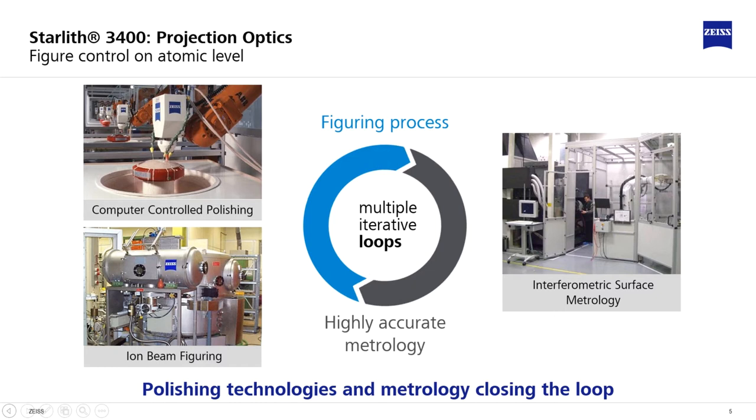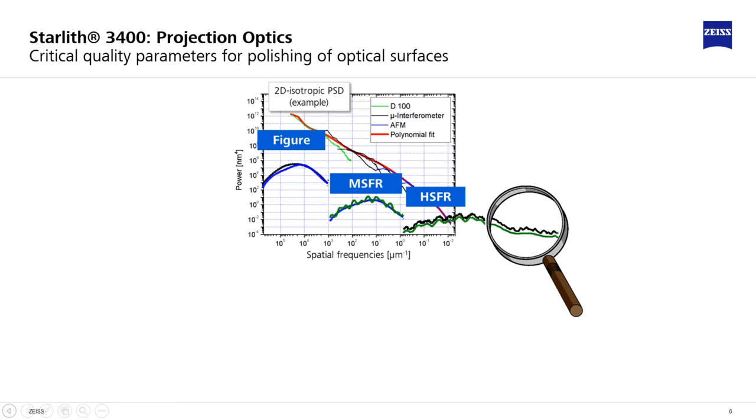Figuring processes and metrology form a closed loop of iterative steps. The real challenge is to control figure quality simultaneously with the mid-spatial frequency roughness MSFR and the high-spatial frequency roughness HSFR.